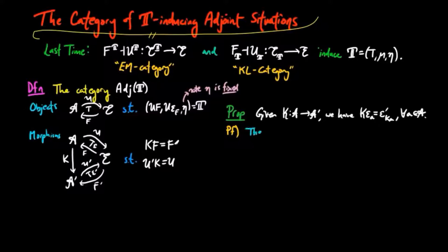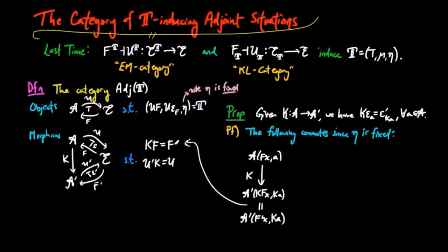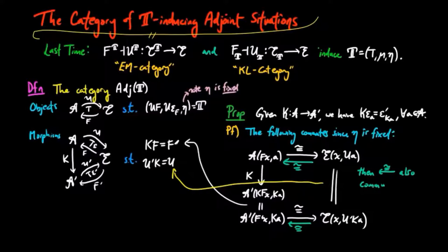Since η is the same for each object, which is in adjoint situation in the category, the following diagram of Hom-sets commutes. Note that the equalities here come from the definitions of morphisms in the category of T-inducing adjoint situations. The isomorphisms on the top and bottom here are those given by the adjoint situations. Then if this square commutes, the square with the inverse to the iso must also commute.